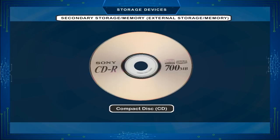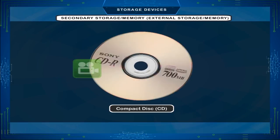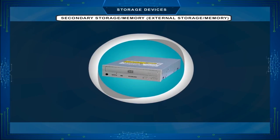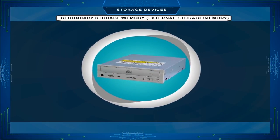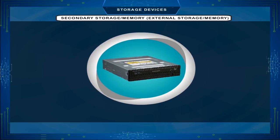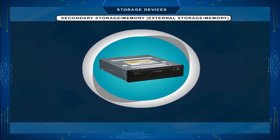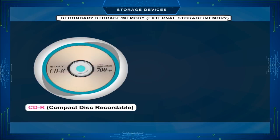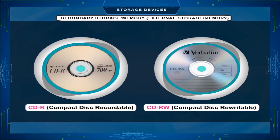Compact disk. The compact disk is an optical round disk that can store information like video, audio, text, image, etc. We need a CD drive to read data from a CD and a CD writer to write data or information on it. CDs are available in two variations: CD-R (compact disk recordable) and CD-RW (compact disk rewritable).